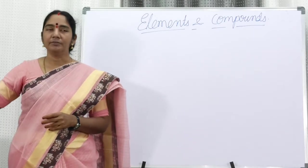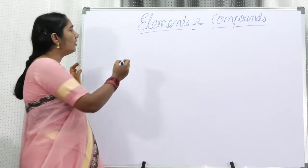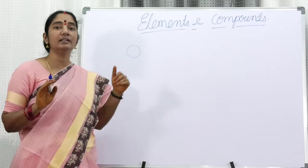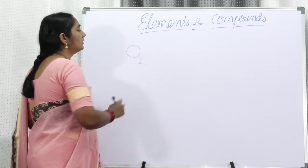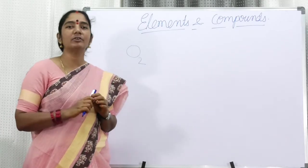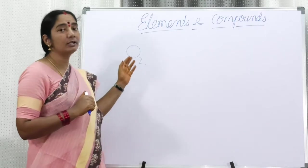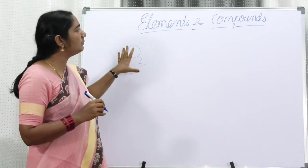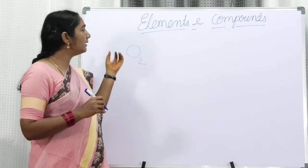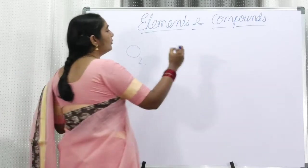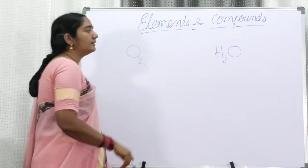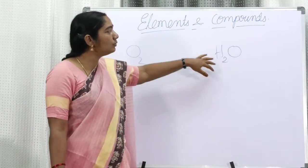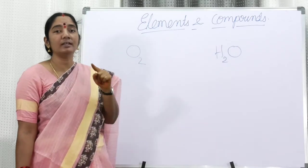For example, if you take oxygen — oxygen is an oxygen atom. If I write one single oxygen, that is the oxygen atom. But oxygen does not exist in nature in the atomic state; it always exists in a molecular state. Two atoms of oxygen combine together to give rise to an oxygen molecule. So generally what we breathe are oxygen molecules, not the oxygen atom. So oxygen is an element — why? Because it is not combining with any other atom.